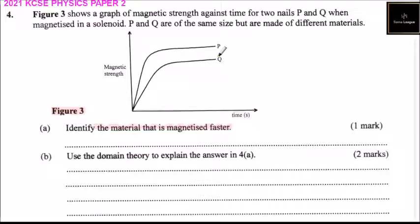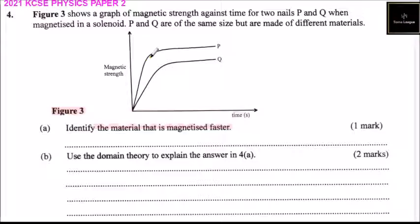Part A: identify the material that is magnetized faster. If you look at the two graphs, P is the one that is being magnetized faster — as you can see, its gradient is steeper. So the answer here is P, and you get one mark.